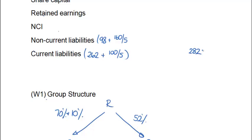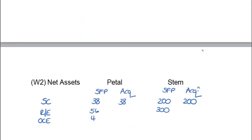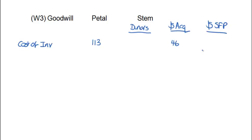I'm going to gamble and put in a total for current liabilities of 282. We've now dealt with all of the figures in the statement of financial position itself. Let's take a look at Note A. It's telling us that we acquired 70% of PETAL initially and the purchase consideration was 94 million. This is different to the figure we've picked out from our statement of financial position. So I'm going to go down to my Goodwill working and take away the cost of the extra 10%, which was 19 million.